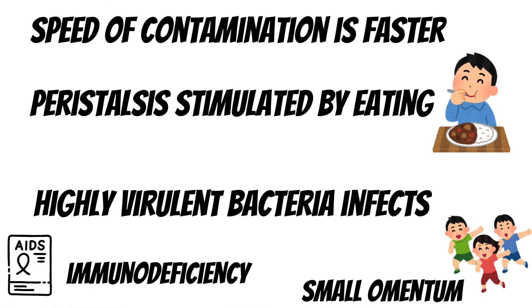Generalized or diffuse peritonitis occurs when the process of localization by the body is affected. It is seen in cases where the speed of contamination is faster, for example a sudden rupture of the appendix leading to sudden spillage of contents into the abdomen. Also, activities like eating which stimulate peristalsis can lead to more leakage of contents into the peritoneal cavity, hence leading to diffuse peritonitis.